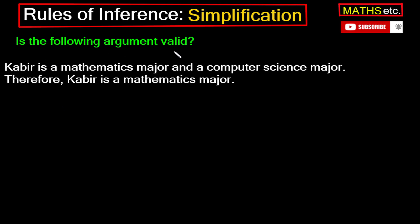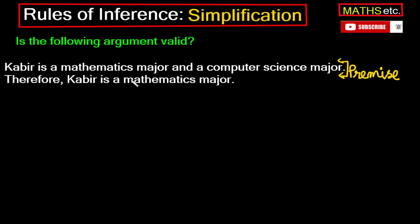Is the following argument valid? Kabir is a mathematics major and a computer science major. Yeh jo argument hai, yeh wali jo proposition hai, yeh is ki premise hai. Therefore Kabir is a mathematics major. Yeh jo proposition hai, yeh is argument ka conclusion hai. Or hameh yeh pata karna hai ki yeh jo argument hai, kya yeh valid argument hai?